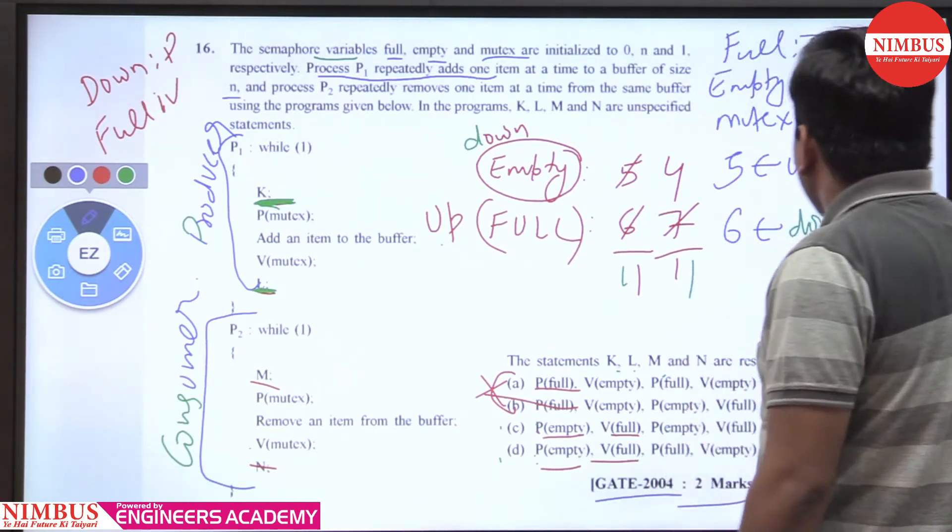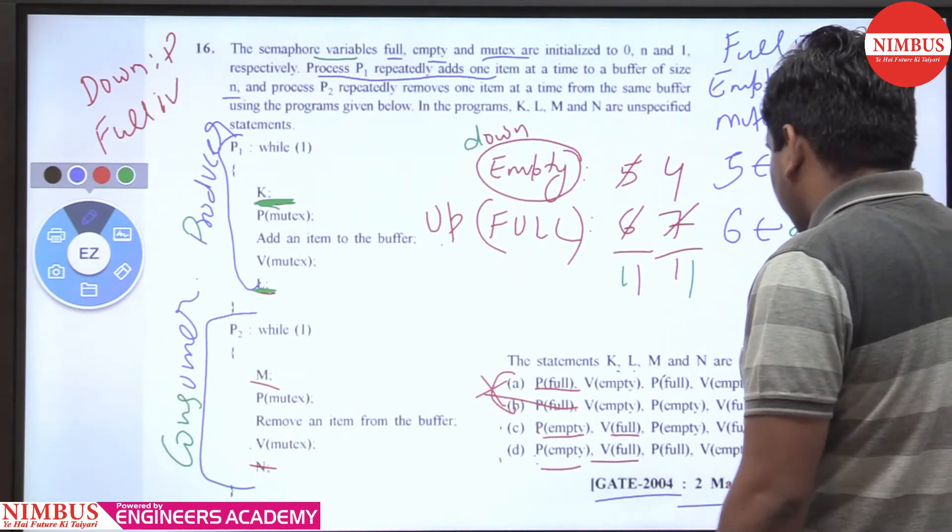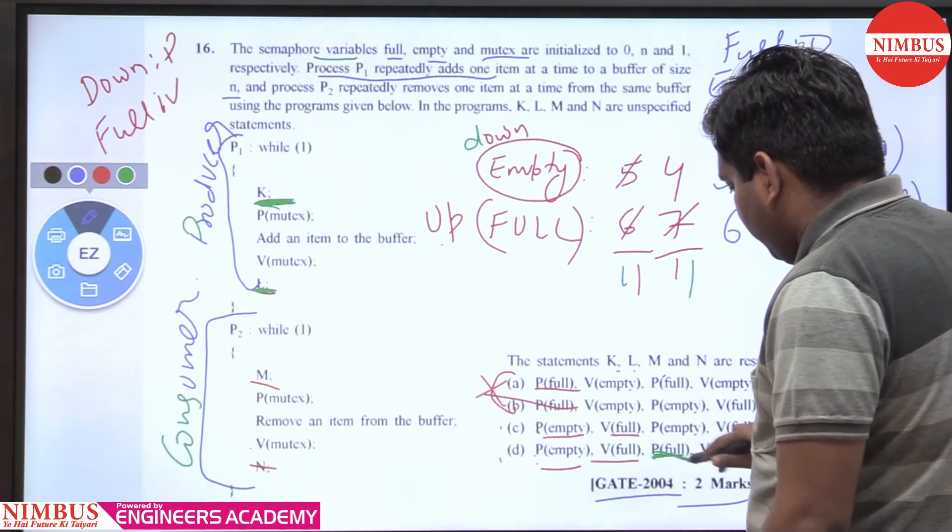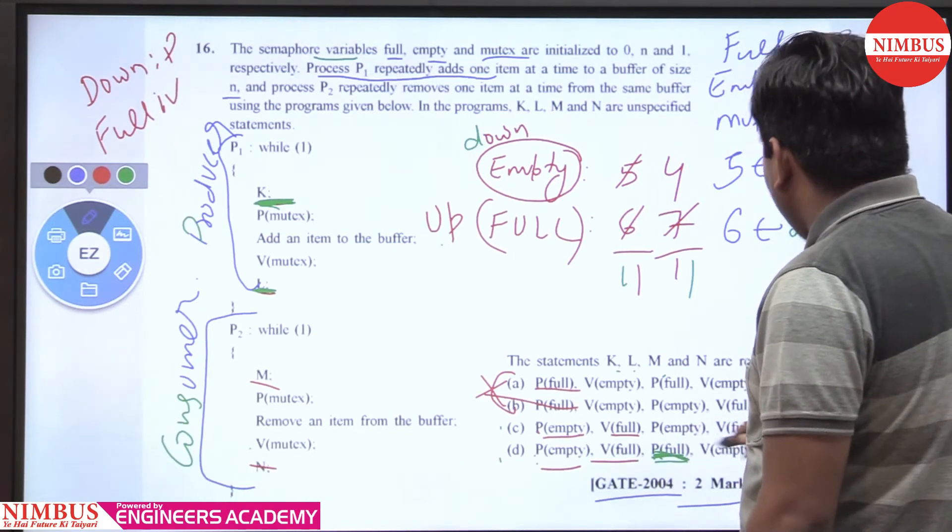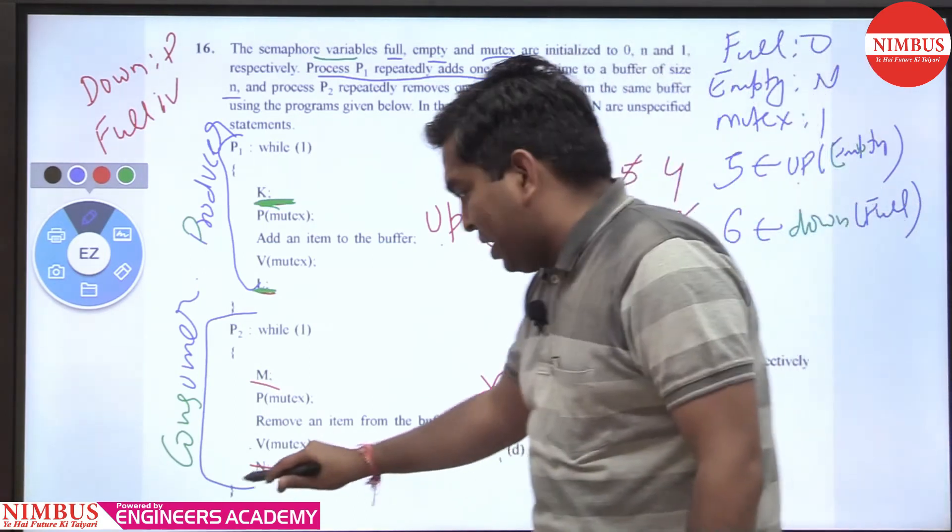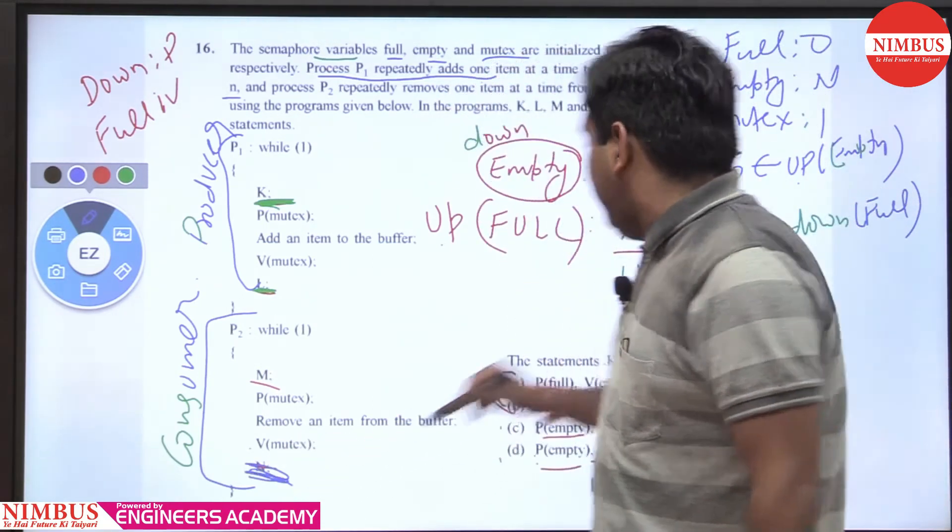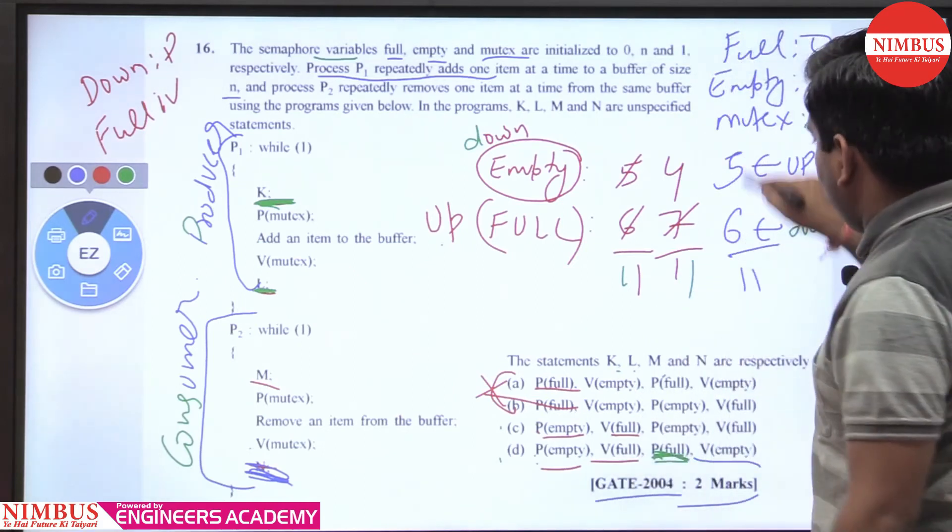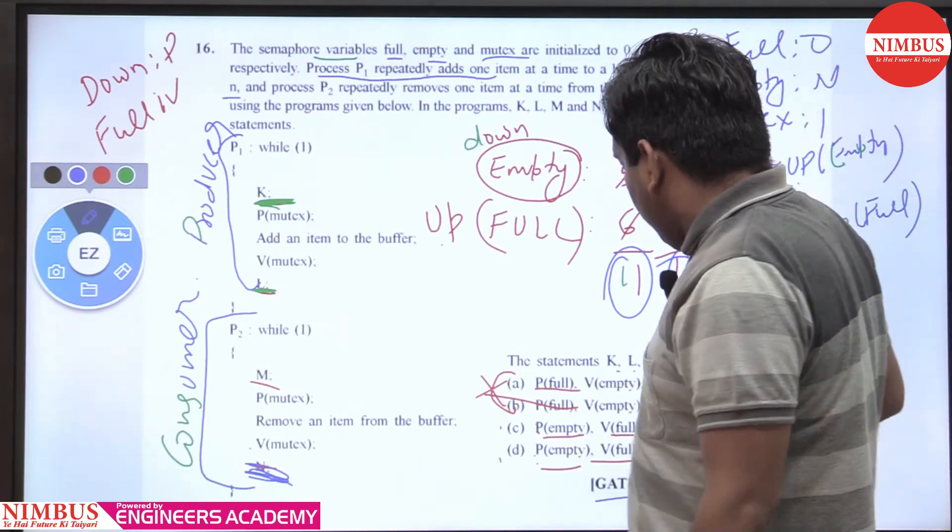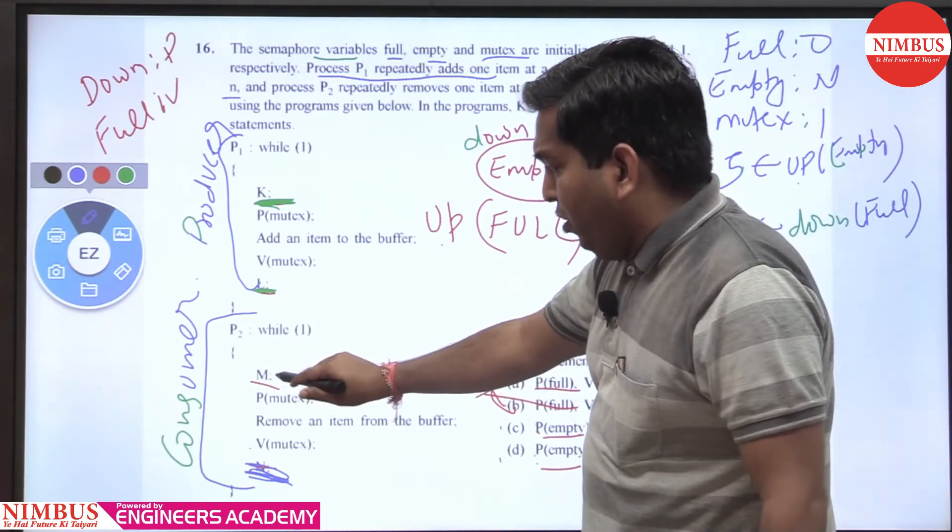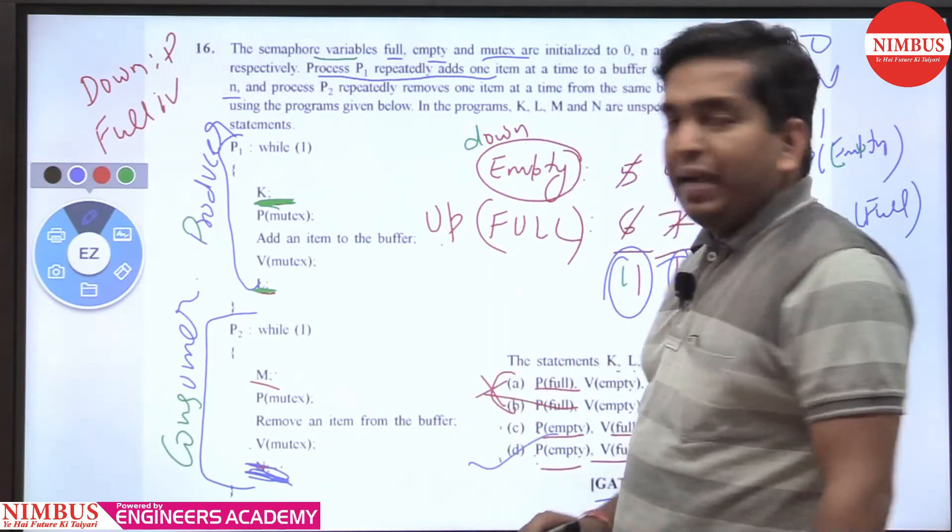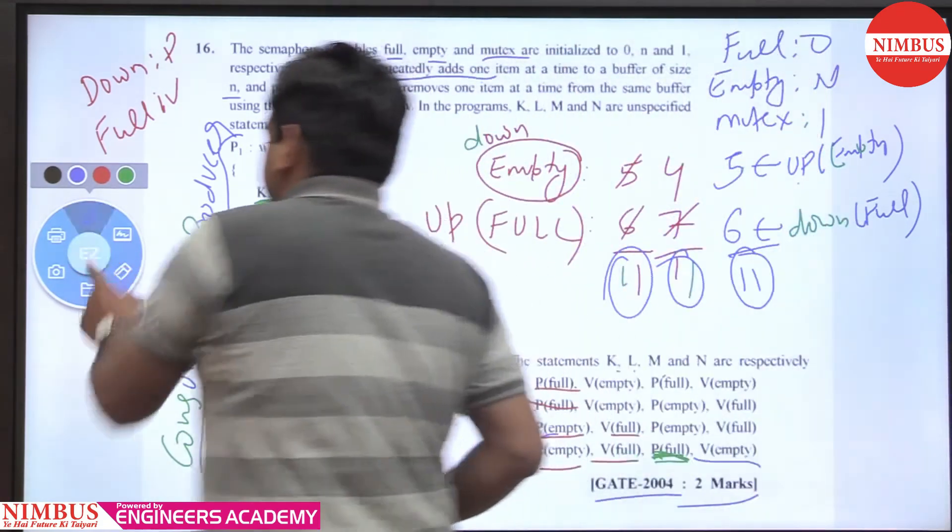First it does P(full) or down full, then after consumption it increments empty. The value increases but the total remains constant: 5 plus 6 equals 11. So it performs down full and up empty, making D the right answer.